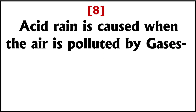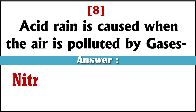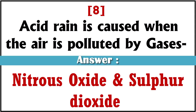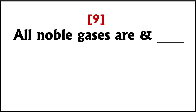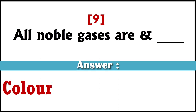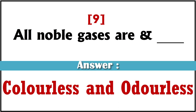Acid rain is caused when the air is polluted by gases. Answer: nitrous oxide and sulfur dioxide. All noble gases are — Answer: colorless and odorless.